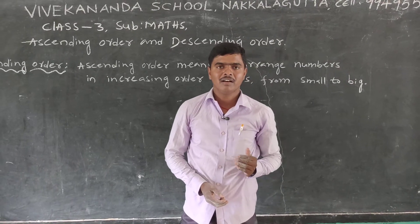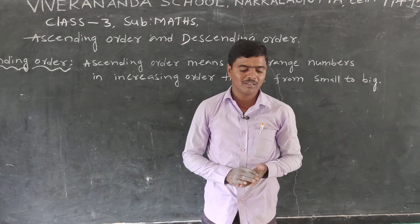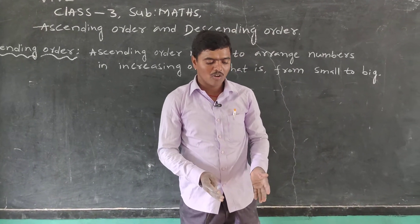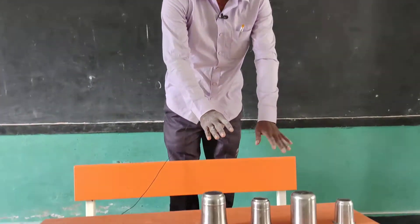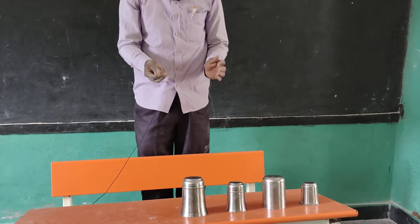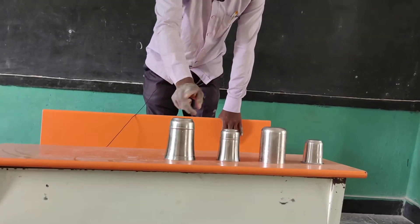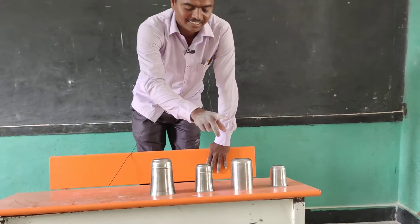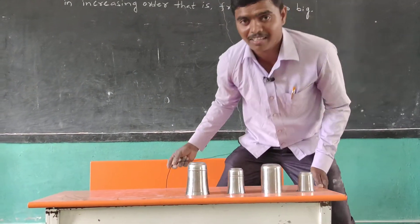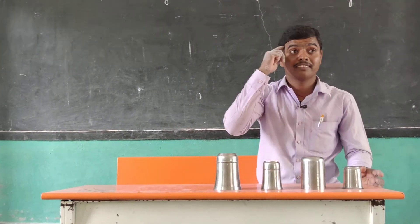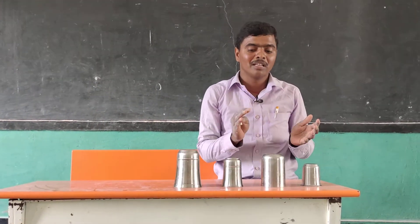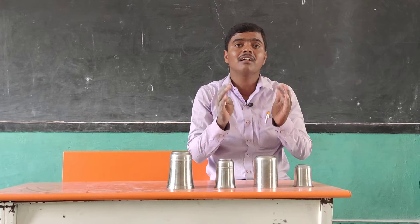Right. Ascending order means small to big. Now a small activity. Here there are 4 glasses. The 4 glasses are to be arranged in ascending order — that means small to big. First, find out the smallest glass.